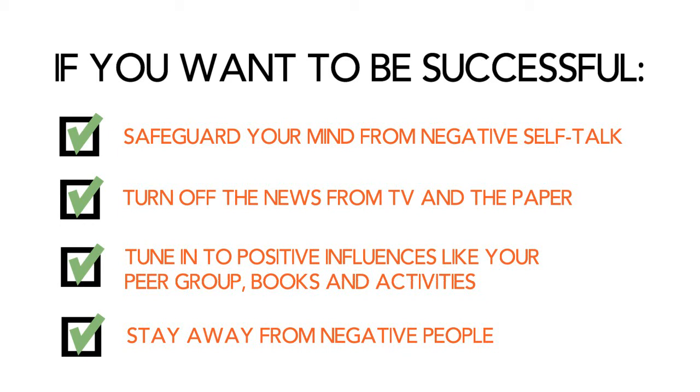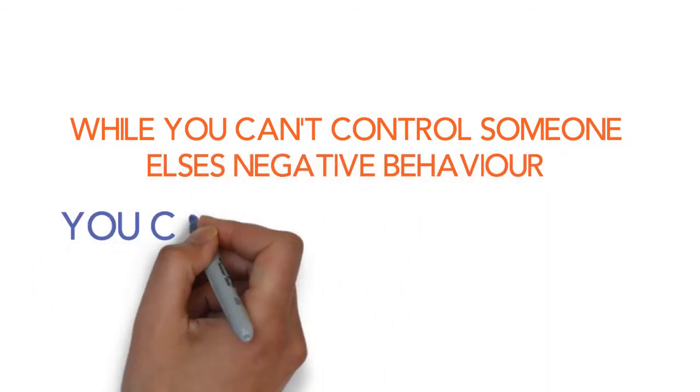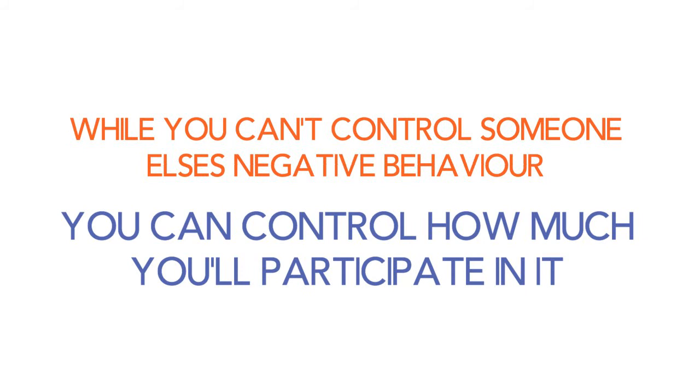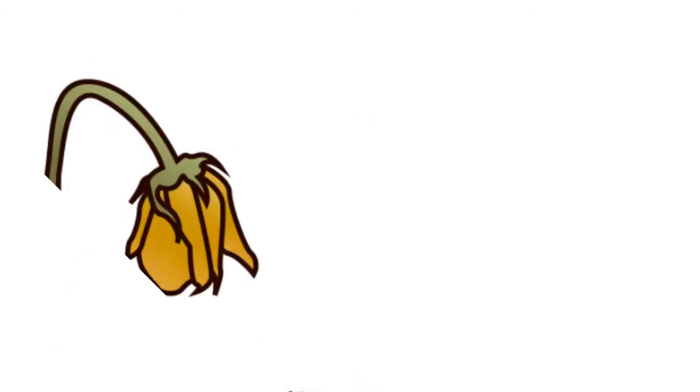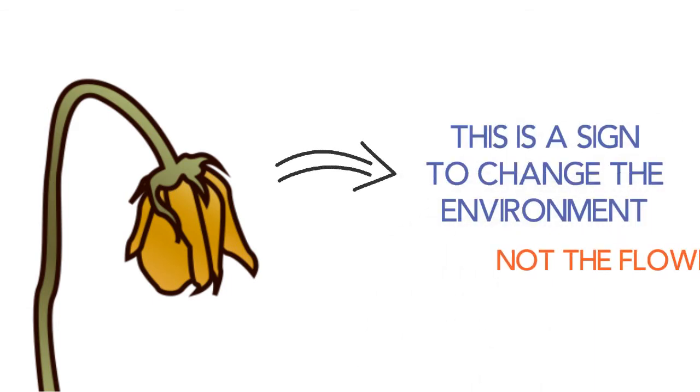Stay away from people whose negative conversations can affect your attitude about yourself. Negative people always have a problem for a solution. And while you cannot control someone's negative behavior, you can control how long you'll participate in it. Life becomes a whole lot easier when you delete negative people and things from it. And successful people know this. Think about it. When a flower doesn't bloom, you fix the environment in which it grows, not the flower.